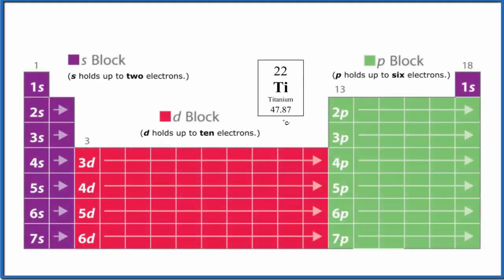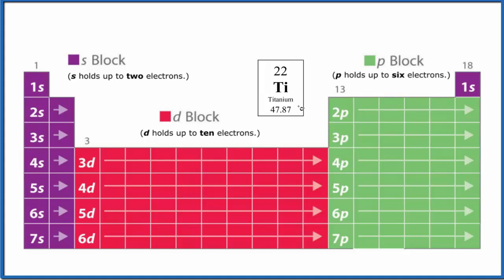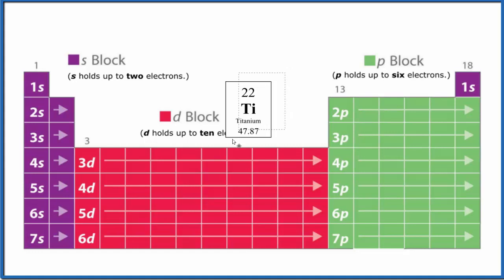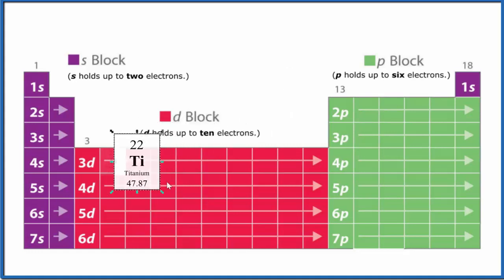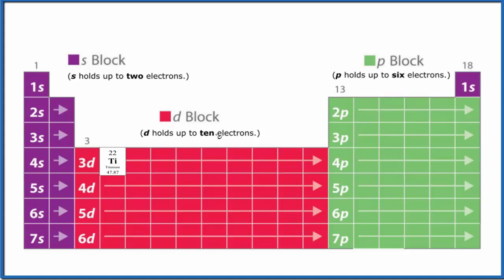Let's write the atomic orbital diagram for titanium — that's Ti. The first thing we need to do is write an electron configuration for titanium, and then we'll write the orbital diagram. Titanium is right here on the periodic table, and it has an atomic number of 22. So it has 22 protons, and also 22 electrons since it's a neutral element — 22 total electrons.